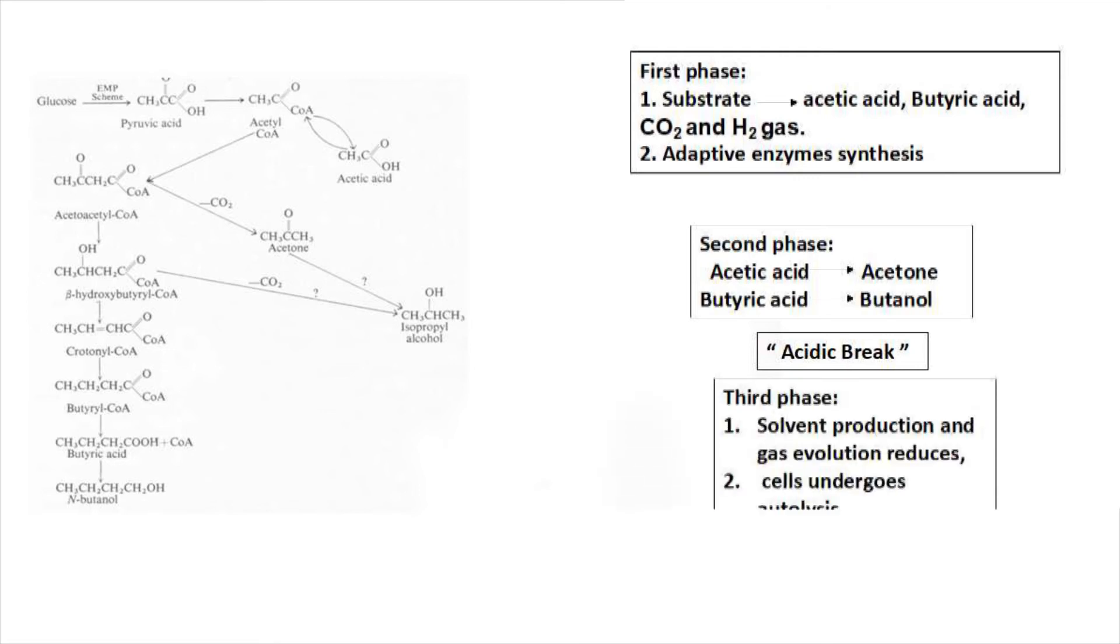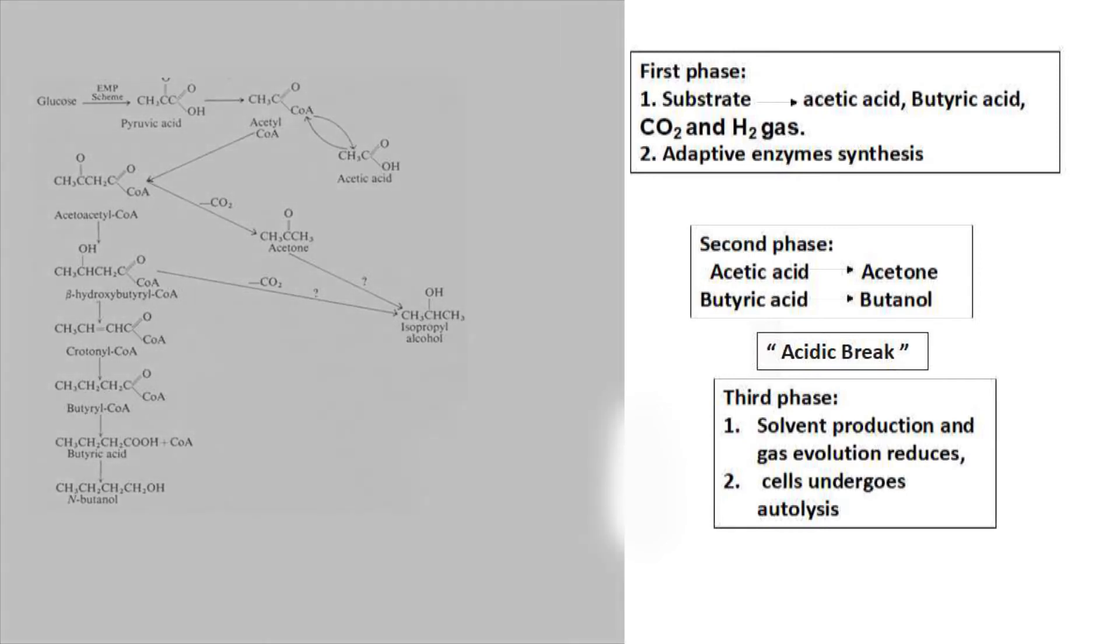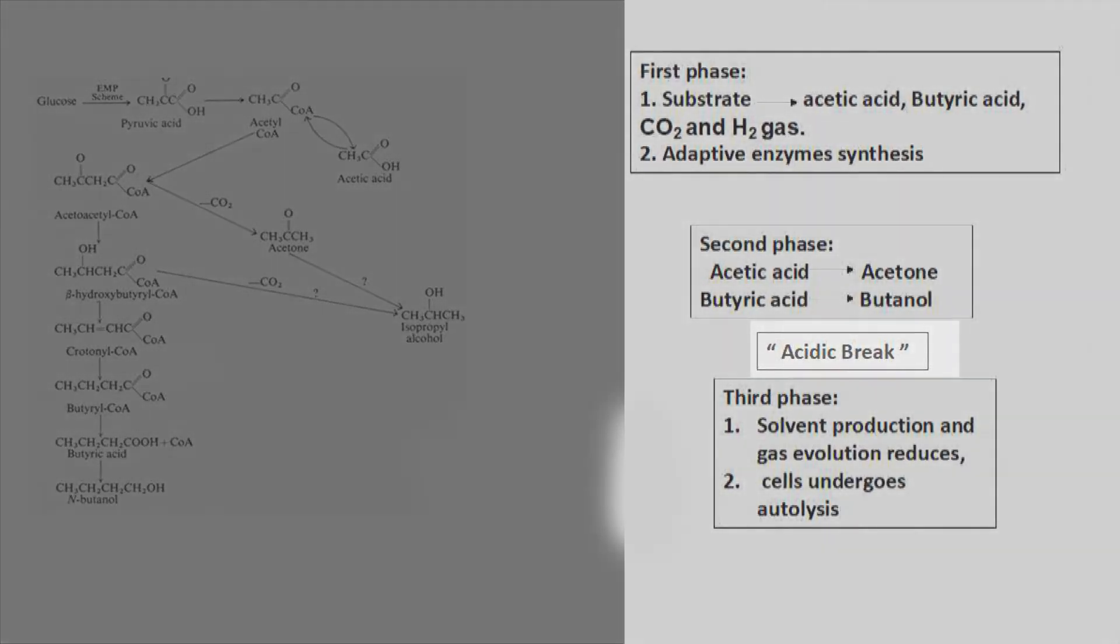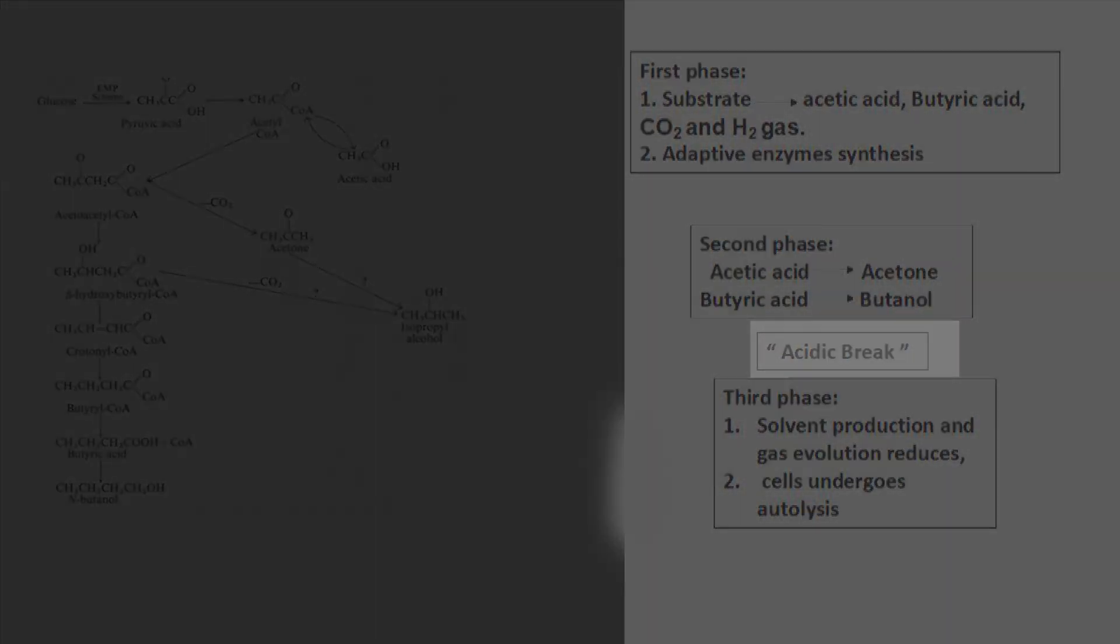During third phase, solvent production and rate of gas evolution decreases. And at the end of this phase, cells undergo autolysis, resulting in the release of vitamins and riboflavin.